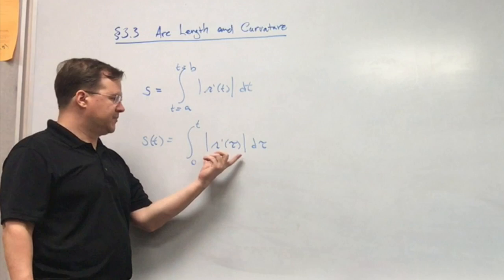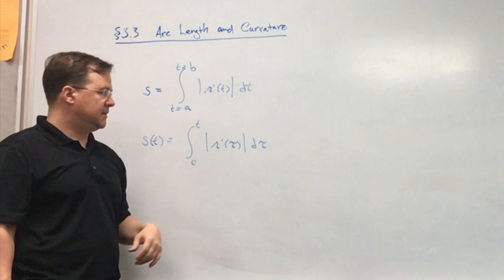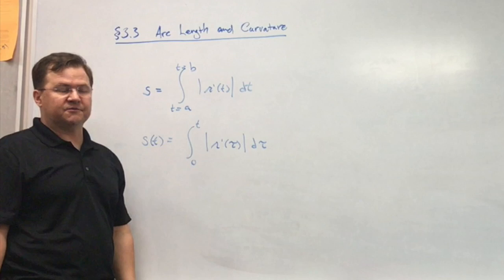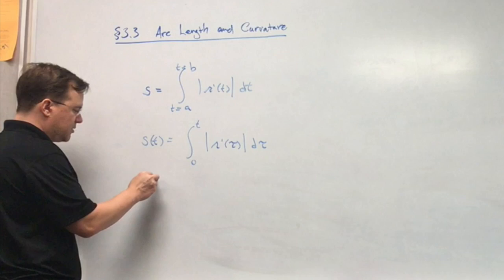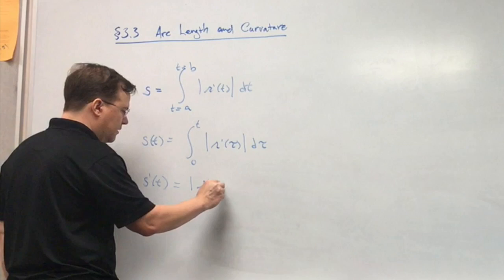In general, if I just make up random functions for r — for x, y, and z — actually computing this could be impossible, if not monstrously difficult. So in general, we don't literally do that. What we do is we just say, well, according to the fundamental theorem of calculus, the derivative would be r prime at t.